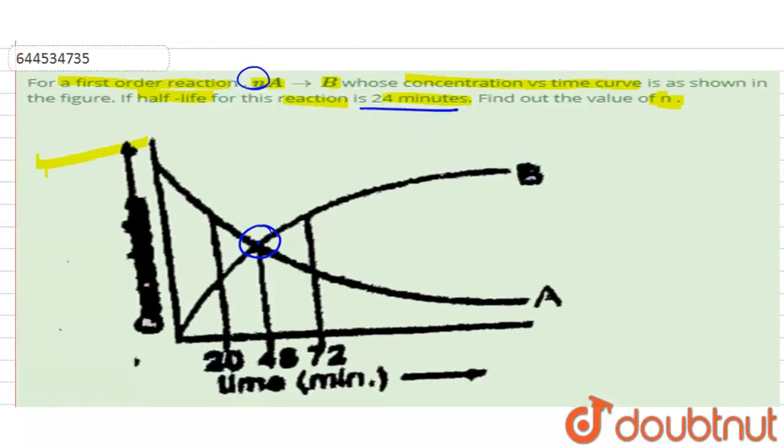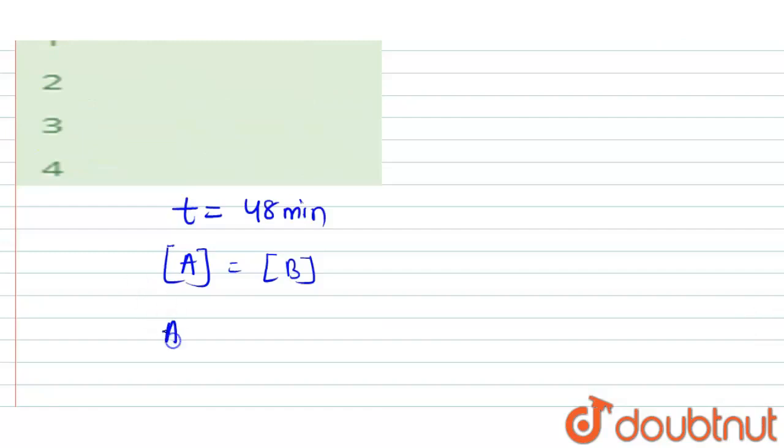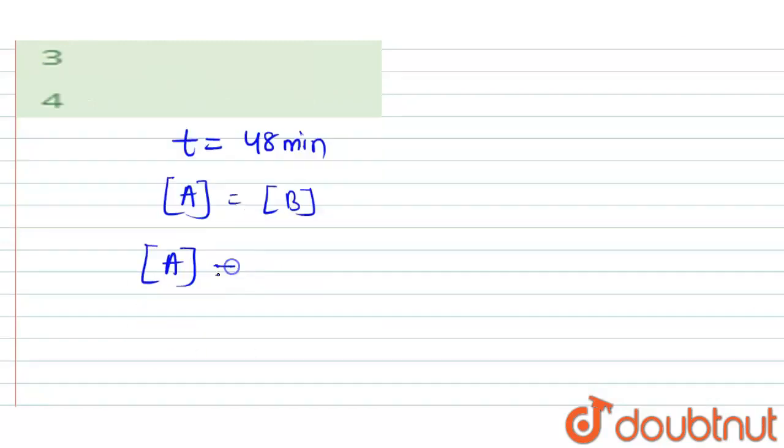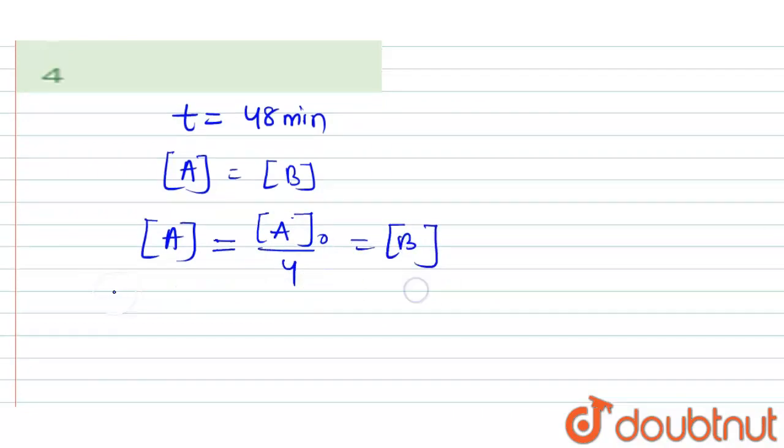So here concentration of A is equal to initial concentration A naught divided by 4, which equals concentration of B. And the reaction given here is nA gives product B.